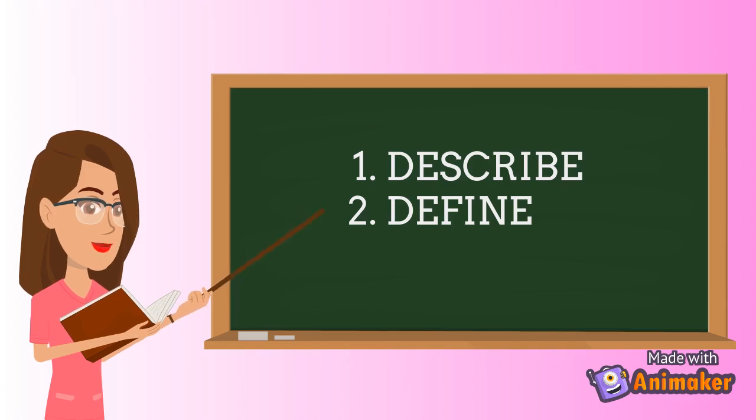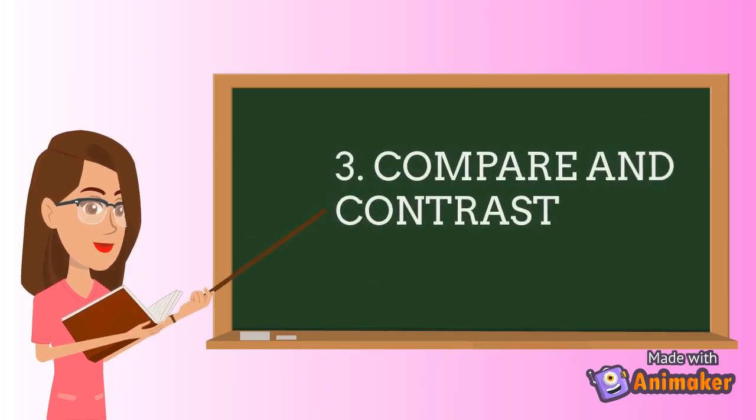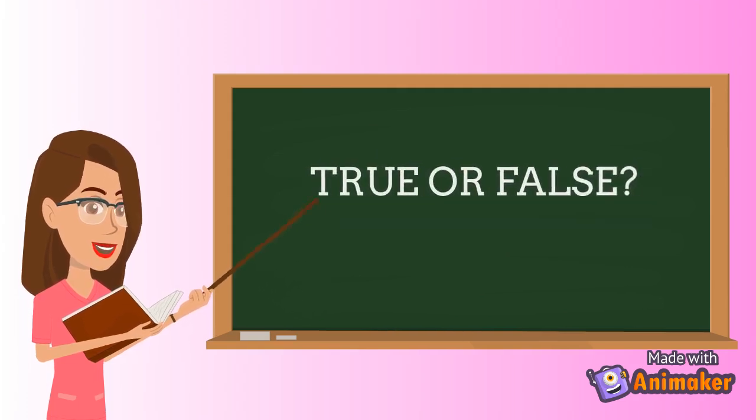The first one is to describe the characteristics or nature of your topic to the audience. The second one is to define or give its meaning. Number three is to compare and contrast, give similarities and contrasting ideas so your audience could better understand your topic. And lastly, you could make some narrations or demonstration about your chosen topic.